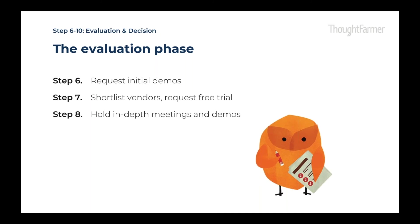Once you've done all these demos, you'll find the ones you really like that hit a lot of your requirements. Step seven is to shortlist and request a free trial. You may start with 10 vendors; shortlist to about three. Hopefully the trial is robust and you can get as many users in there as you like. Really get in there, look at your use cases, and try to accomplish them within the trial site. Don't be afraid to ask for help — going into any new application can be overwhelming.